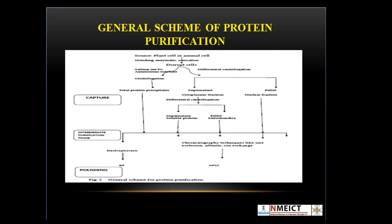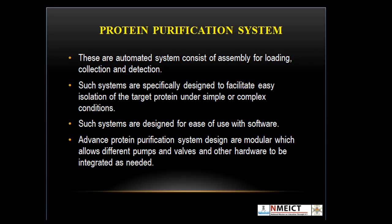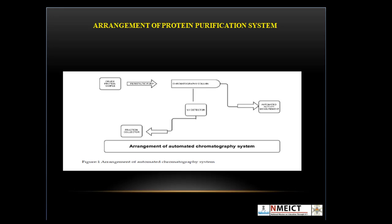Now let's learn about the protein purification system. These are automated systems consisting of assemblies for loading, collection, and detection. Such systems are specifically designed to facilitate easy isolation of the target protein under simple or complex conditions, and are designed for ease of use with software. Advanced protein purification system designs are modular, allowing different pumps, valves, and other hardware to be integrated as required. The automated chromatographic system includes space for chromatographic columns; the columns receive the sample with the help of a peristaltic pump, and from each fraction automated activity measurement and UV detection are carried out.